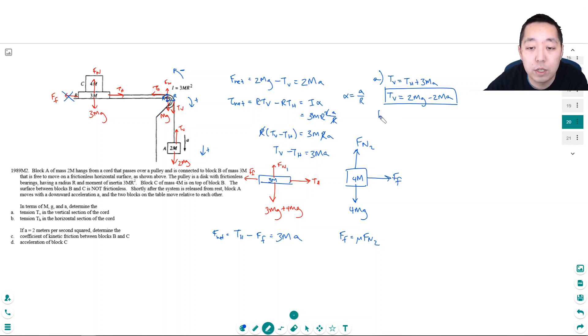So for part B, Th equals Tv minus 3MA. Well, Tv is 2Mg minus 2MA. So that's 2Mg minus 2MA minus 3MA. That equals 2Mg minus 5MA.